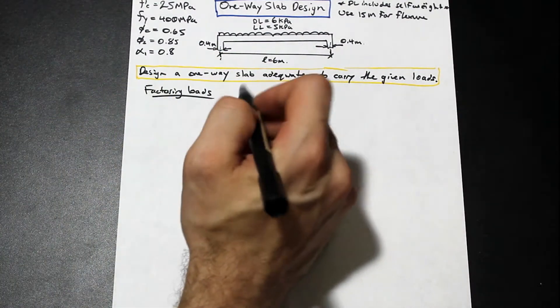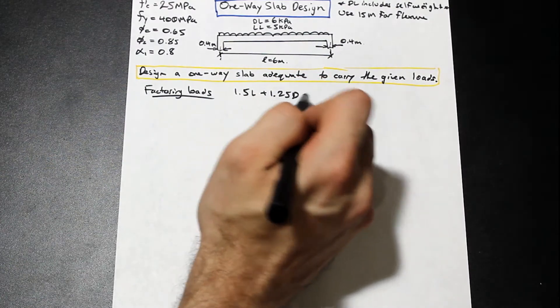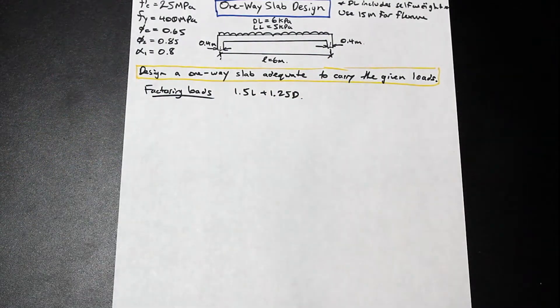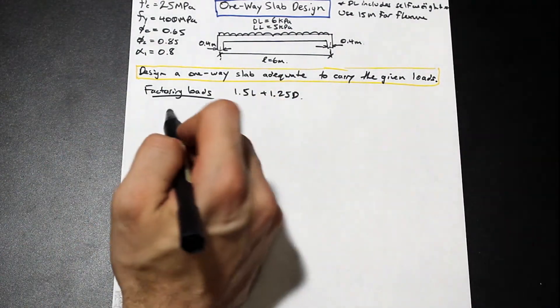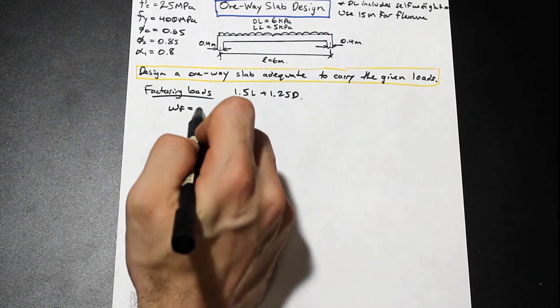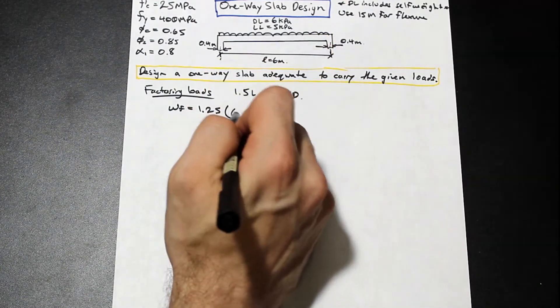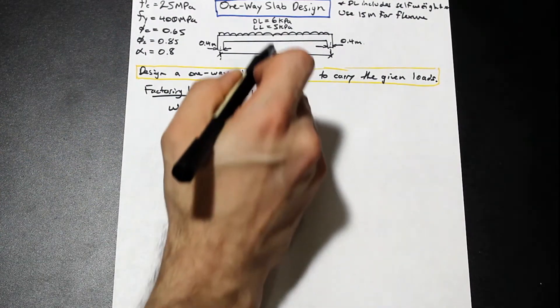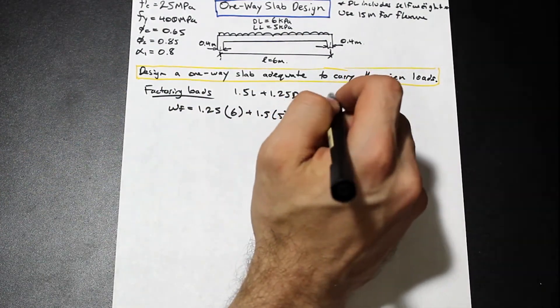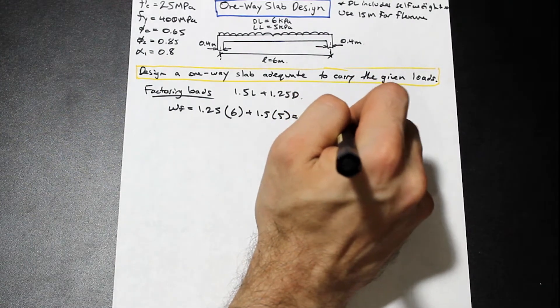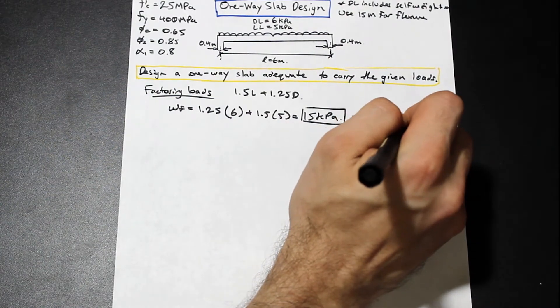With that being said, let's start by factoring the loads. So in Canada, we use 1.5 live plus 1.25 dead. There's other load combinations, but for this question, this is kind of like the typical load factor that we're going to use. So we have our factored load is 1.25 dead, that load is 6 kPa, plus 1.5 live, 5 kPa. That's going to give us a factored load of 15 kPa, which is equal to 15 kilonewton per meter squared.